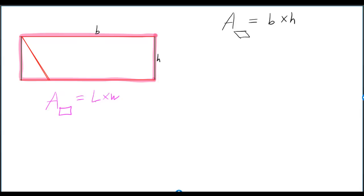The area for a rectangle is length times width. We can let our length be b, and our width be h. So the area of the rectangle is base times height.